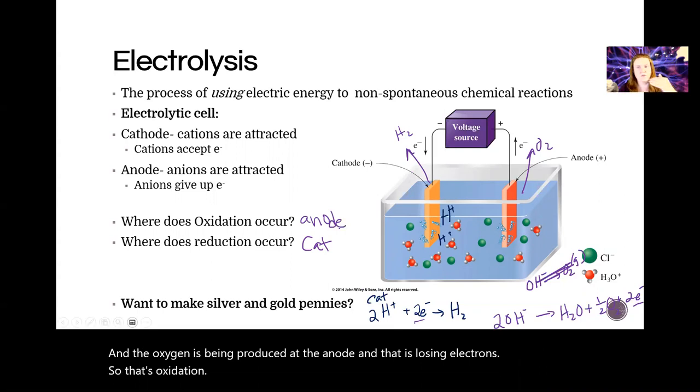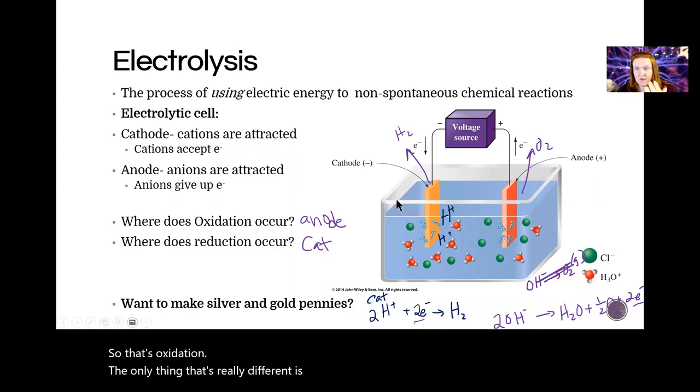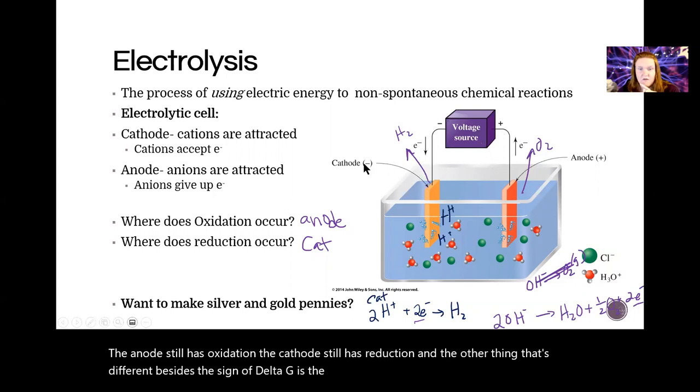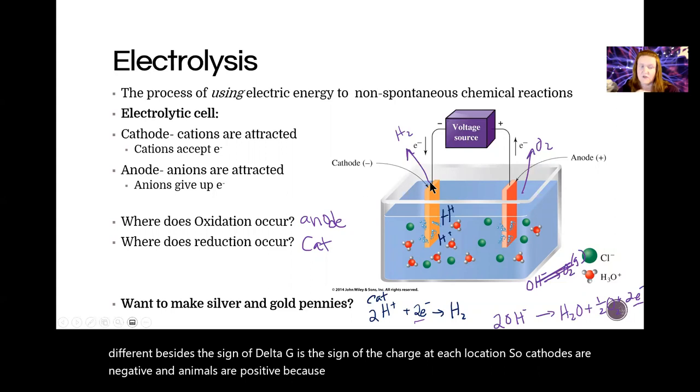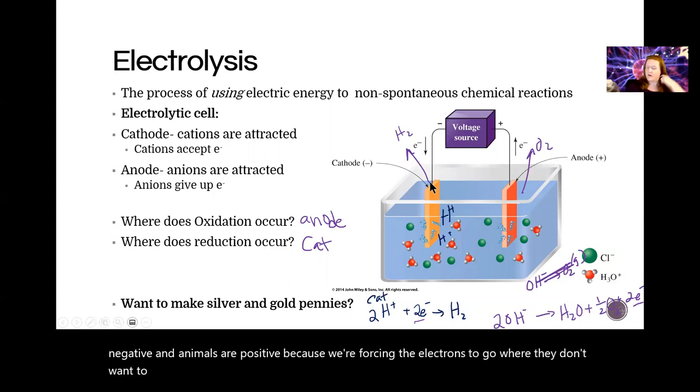So the only thing that's really different is the delta G's. Of course, we'll have a different sign, positive. The anode still has oxidation. The cathode still has reduction. And the other thing that's different besides the sign of delta G is the sign of the charge at each location. So cathodes are negative and anodes are positive because we're forcing the electrons to go where they don't want to go.